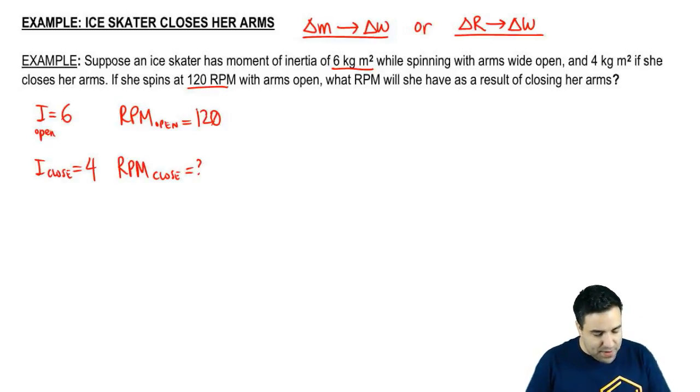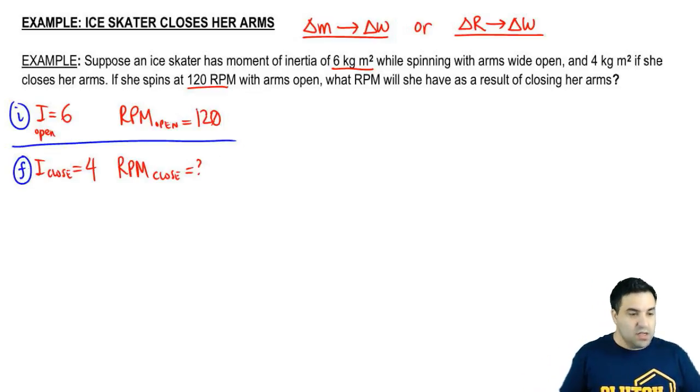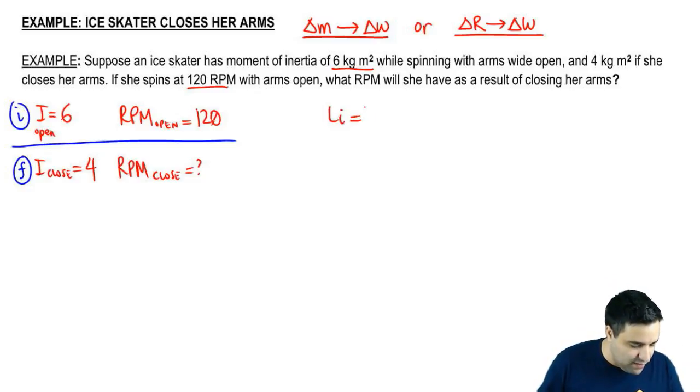So you can think of open as initial because that's where we start and you can think of close as final. So we're going to use the conservation of angular momentum equation which is LI equals LF.